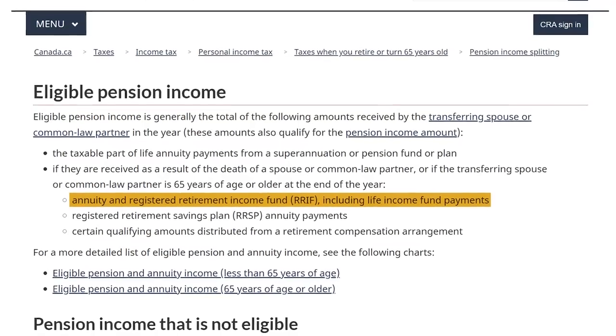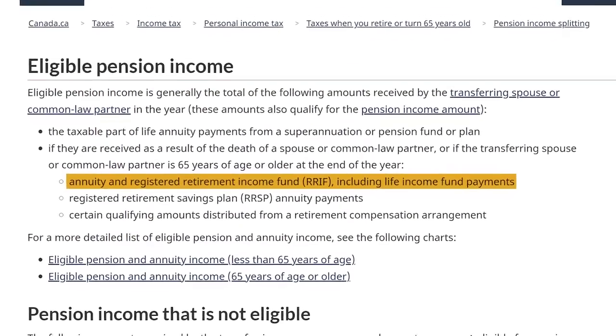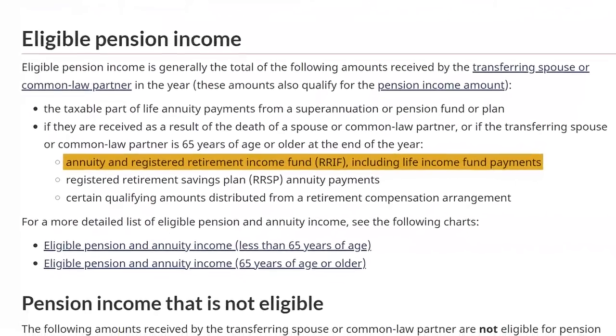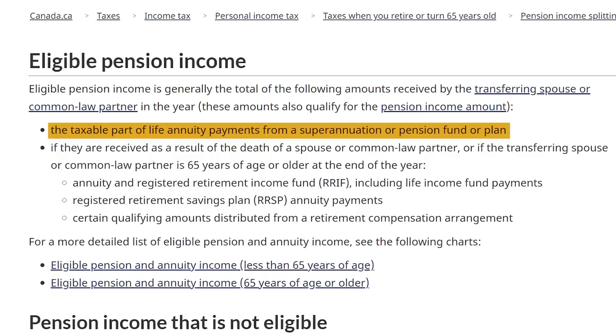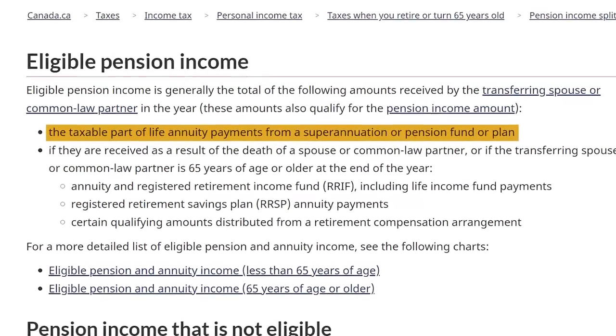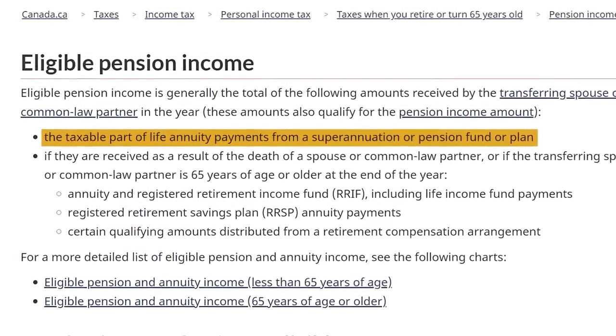In a general overview, income splitting qualifies once you hit age 65. RIF income, for example — for a lot of you that's your main income in retirement — can be income split. Now if you have a defined benefit pension plan, a DB plan, any income from a defined benefit pension plan can also be split before age 65. There are also some other smaller income sources that could potentially be income split, detailed in the link below. For most of you watching, if you have a defined benefit plan that can be split at any age, so pre-65.